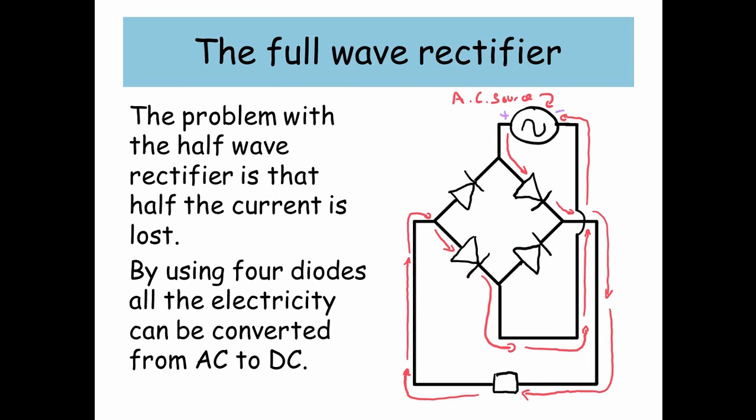Now, this circuit is called the full-wave rectifier. The problem with the half-wave rectifier is that half the current is lost. So by using four diodes in this very clever way, all the electricity can be converted from AC to DC. And if you look at the bottom there, I've put a resistor in our circuit.